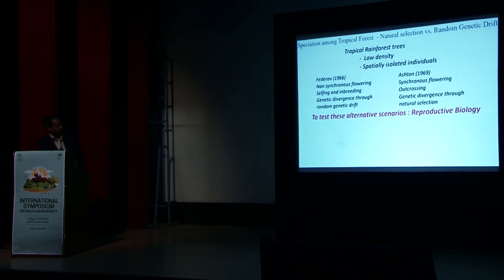So to test these two alternative scenarios, reproductive biology is the one key, because if you look at this one, essentially we are talking about selfing and inbreeding, outcrossing. So to do that, we need flowering phenology, we need mating system, we need gene flow, pollination, and seed dispersal.